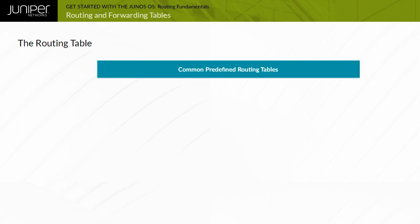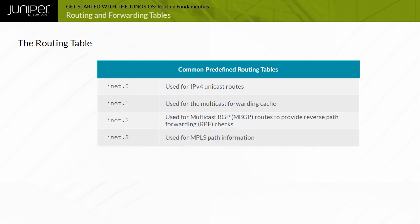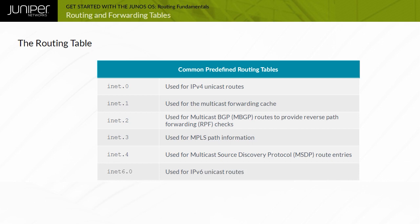Here are the common predefined routing tables you might see on a device running Junos OS: iNet.0, used for IPv4 unicast routes; iNet.1, used for the multicast forwarding cache; iNet.2, used for multicast BGP or MBGP routes to provide reverse path forwarding or RPF checks; iNet.3, used for MPLS path information; iNet.4, used for multicast source discovery protocol or MSDP route entries; iNet6.0, used for IPv6 unicast routes; and iNet6.3, used for MPLS next hops.